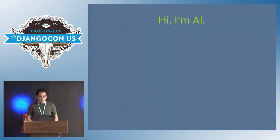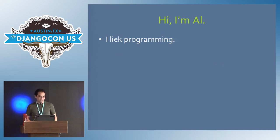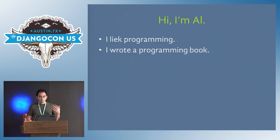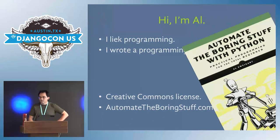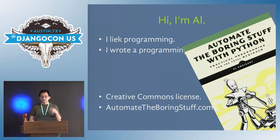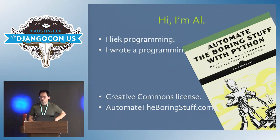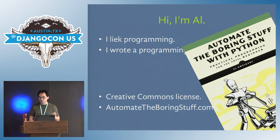I'll start with a slightly controversial opinion: I like programming. There are several things I like about it — mostly that it requires a keen attention to detail. I like programming so much that I want to teach other people to program, so I wrote a book called 'Automate the Boring Stuff with Python.' It's available under a Creative Commons license, so you can read it for free at AutomateTheBoringStuff.com. Having it online means I can use analytics to see which chapters are most read — and the chapters on web scraping and GUI automation are the most popular. So that's what this presentation is about.